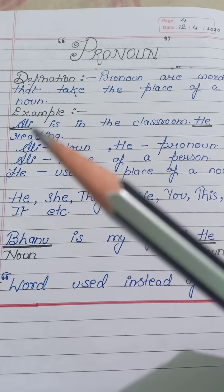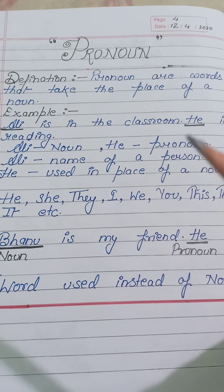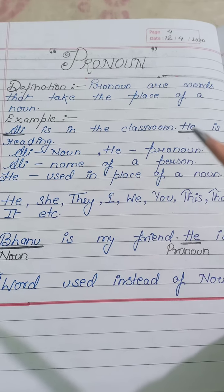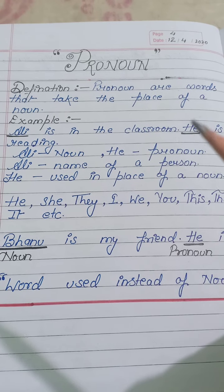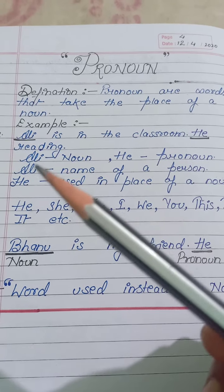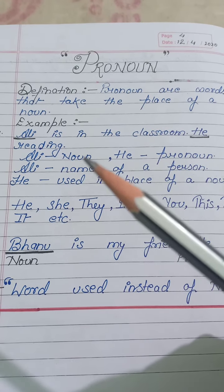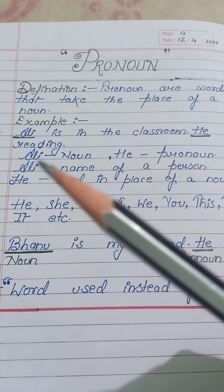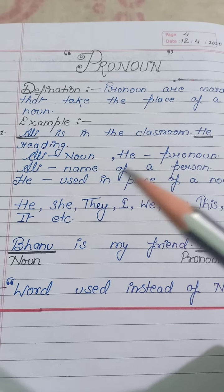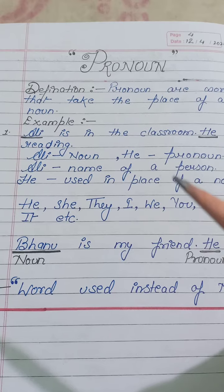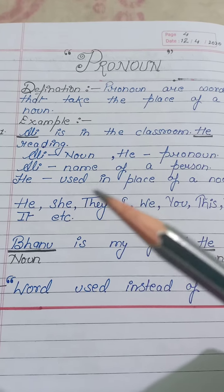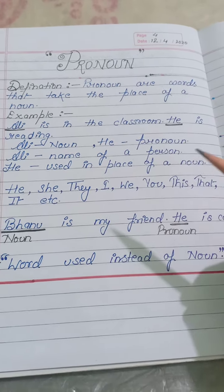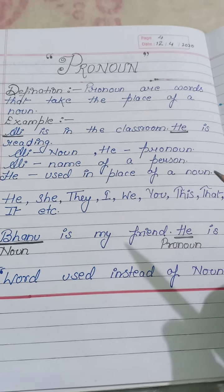Here 'Ali' is used, and in the second sentence 'he' is used. So 'he' is a pronoun. Ali kya hai? Name of a person — Ali kisi ka naam hai. And 'he' is used in place of a noun.